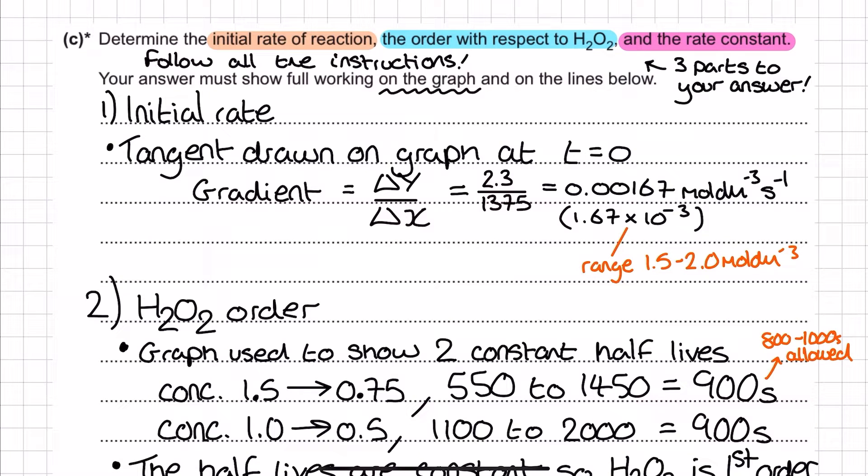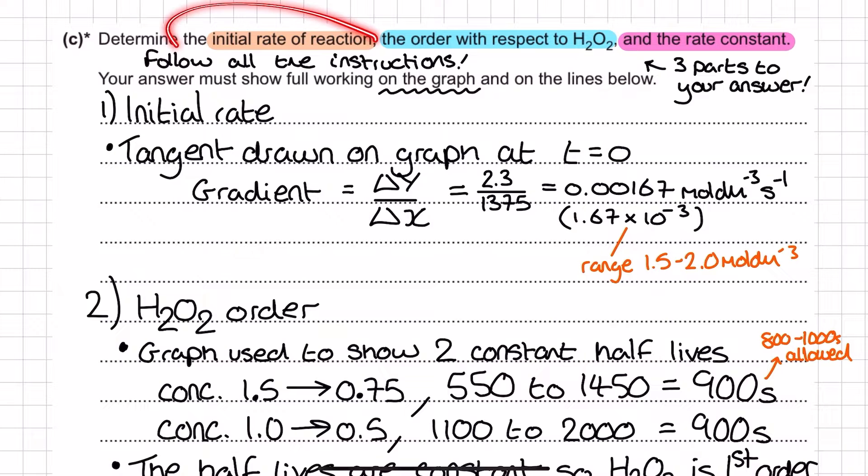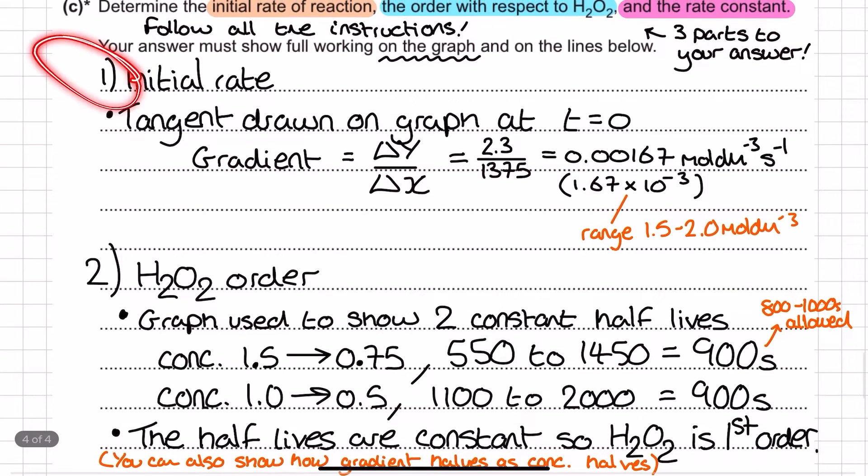The question tells us to determine the initial rate of reaction, the order with respect to the hydrogen peroxide, and the rate constant. I have noticed that OCR's level of response questions when it comes to rate of reaction are structured like this, where they give you all the instructions in one or two lines. They don't list them out separately. So you can see here with my highlights, I've got three clear parts to my answer, and I've put those as my three clear sections in the discussion just below.